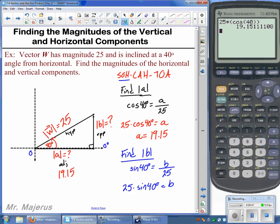So we'll go ahead and type that in as well. 25 times the sine of 40. I don't think we would need that extra set of parentheses there, but we'll go ahead and enter, and we see we get approximately 16.07 for B.